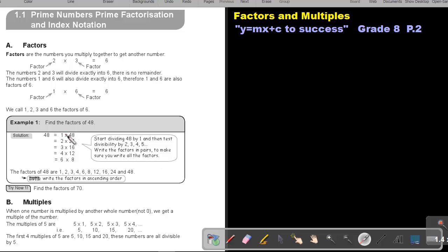Don't forget that the reverse operation of multiplication will be division. So, I can find this number by saying 48 divided by 1 will be 48. 48 divided by 2 will be 24. 48 divided by 3 will be 16.